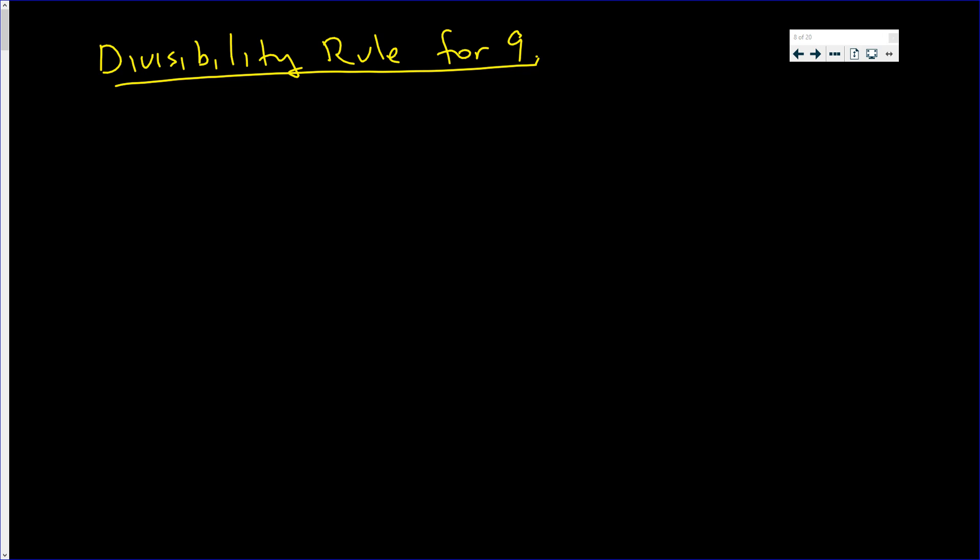In this video we're going to derive the divisibility rule for 9. Any integer can be written in the form of a_n times 10^n plus a_(n-1) times 10^(n-1) all the way down to a_1 times 10 plus a_0.